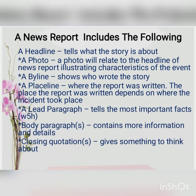Next, a byline shows who wrote the story — the name of the writer. Next, a placeline is where the report was written, depending on where the incident took place. Next, a lead paragraph tells the most important facts: who, what, where, when, why, and how. That is — who are you talking about, what is it all about, where did it happen, when did it happen, why did it happen, and how did it happen. This 5W1H should be included in a lead paragraph.